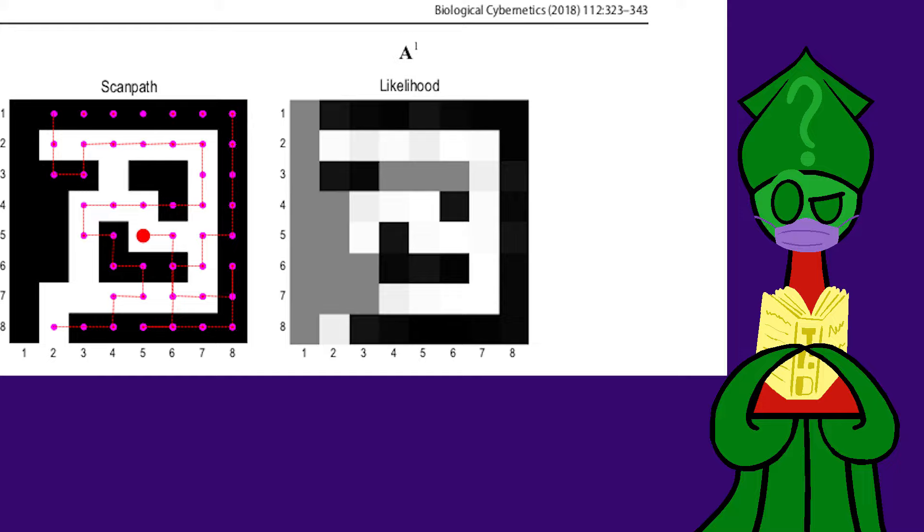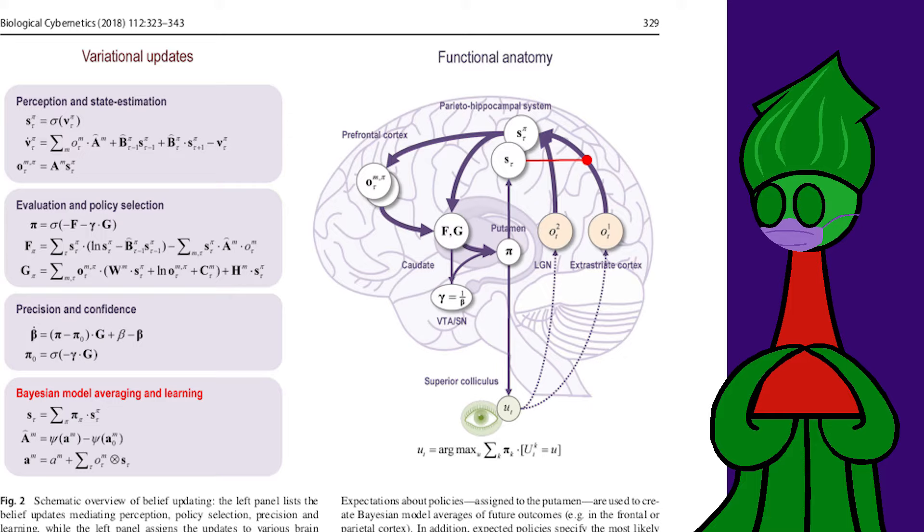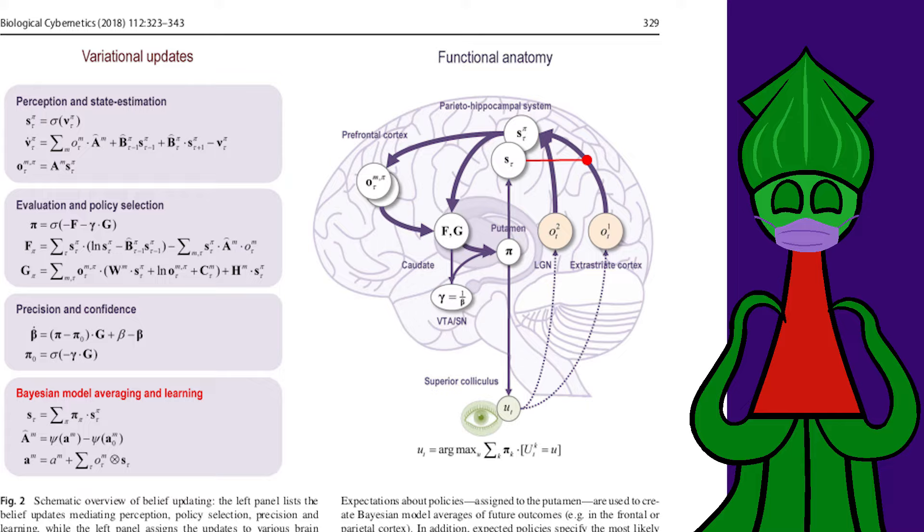Minimizing free energy works. Maybe it's not how the human brain literally operates, but it can make working robot brains, and that's good enough for me. It works. How does it work?